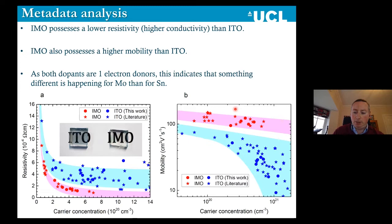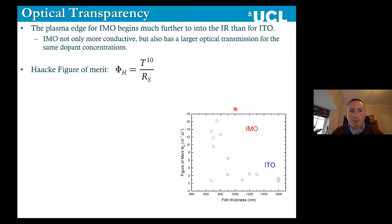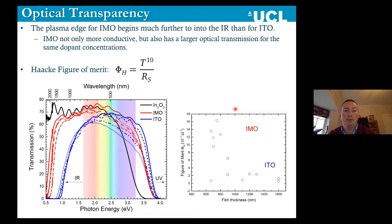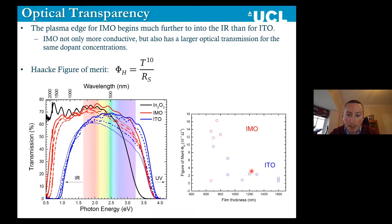We looked at the optical transparencies of these systems. The plasma edge for IMO actually begins much further into the IR than you'd see for ITO, meaning that IMO is not only more conductive but actually has a larger optical transmission for the same dopant concentrations. We plotted a Haacke figure of merit — transmission to the power 10 over the sheet resistance — and for similar film thicknesses, the figure of merit for IMO can be up to twice as good as for ITO. So IMO is definitely outperforming ITO and showing different properties.